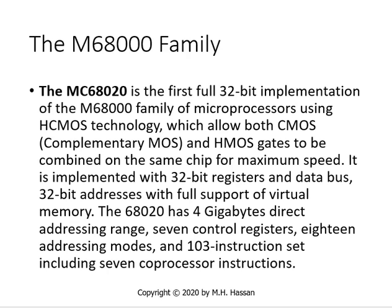The MC68020 is the first full 32-bit implementation of the MC68000 family using HCMOS technology, which allows both CMOS — complementary MOS — and HMOS gates to be combined on the same chip at maximum speed. It is implemented with 32-bit registers and data buses. The 32-bit addresses with full support of virtual memory give the 68020 a 4-gigabyte direct addressing range, 7 control registers, 18 addressing modes, 101 instruction set, including 7 coprocessor instructions.